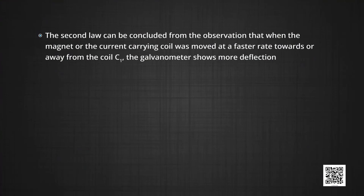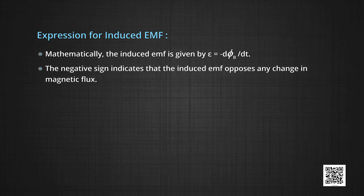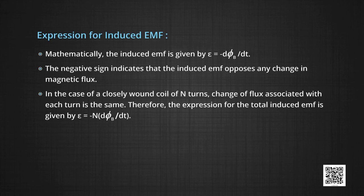The second law states that the magnitude of the EMF induced in the coil is directly proportional to the rate of change of magnetic flux linked with the coil. This can be concluded from the observation that when the magnet or the current-carrying coil was moved at a faster rate towards or away from coil C1, the galvanometer showed greater deflection. Mathematically, the induced EMF is given by E = −dΦ_B/dt. The negative sign indicates the direction of E and hence the direction of current in a closed loop. For a closely wound coil of N turns, where the change of flux associated with each turn is the same, the total induced EMF is E = −N dΦ_B/dt.